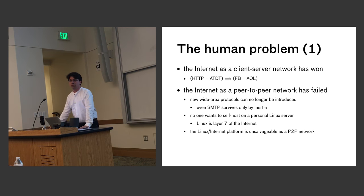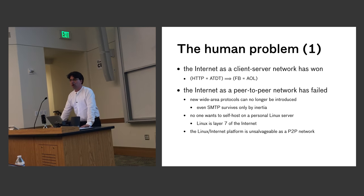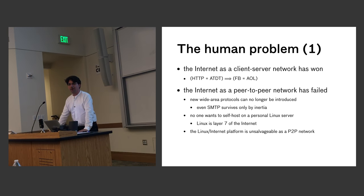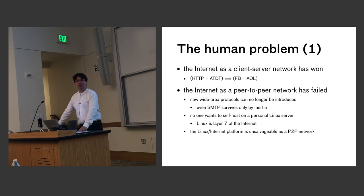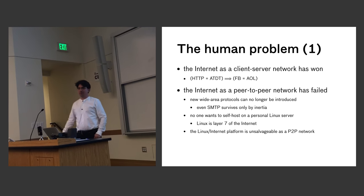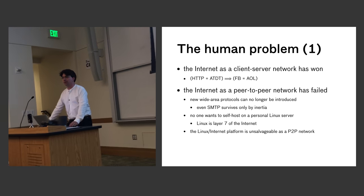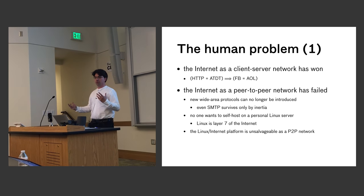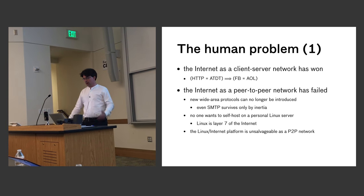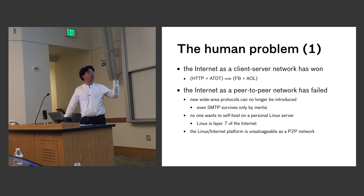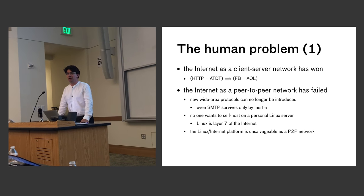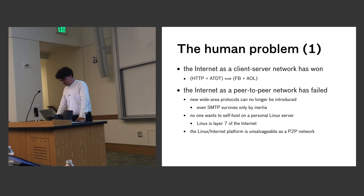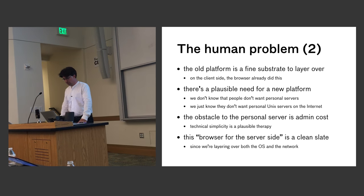You can't introduce a new wide area protocol on the internet today — you can barely keep SMTP alive. These systems were designed in the 70s, the same for Linux, which is layer seven of the internet, the application layer. If you're on the internet, you're either a Unix box or you're pretending to be one. I can't really say to my mother, 'Go get an AWS box and apt-get install something.' That's never going to fly.